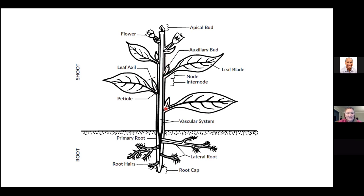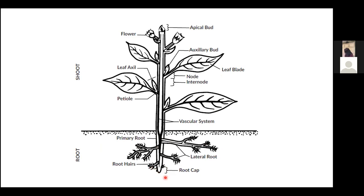Underground we have our primary roots, root hairs — which are actually what take up the majority of the water and nutrients from the soil, so they're super important — lateral roots, and our root cap, which is where we have most of our meristematic root activity happening: cell division, cell elongation, and things of that nature. That's just a general overview.